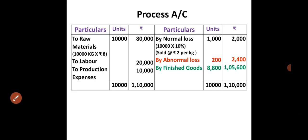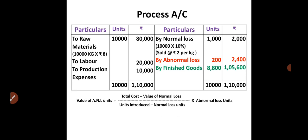Now we have to find out the value of this abnormal loss. It is calculated using the formula: (Total Cost − Value of Normal Loss) ÷ (Units Introduced − Normal Loss Units) × Abnormal Loss Units. Using this formula, we substitute the values.